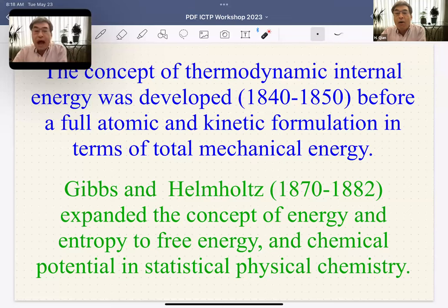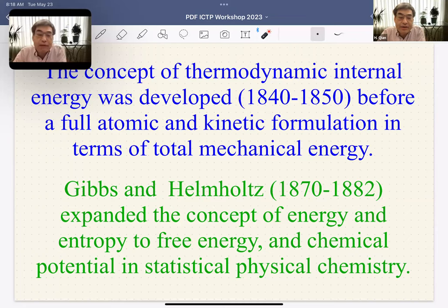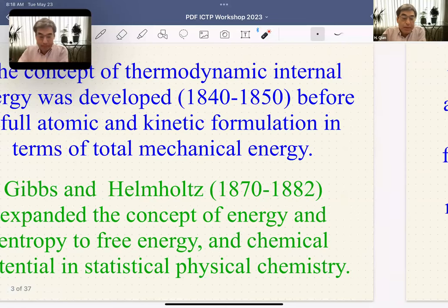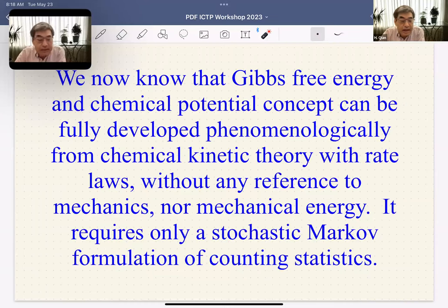The concept of energy and entropy was expanded by Gibbs and Helmholtz in 1870 to 1882, introducing the concept of free energy and chemical potential. Now we know Gibbs free energy and chemical potential can be fully developed from a chemical kinetic theory without any reference to mechanics or even any notion of mechanical energy.